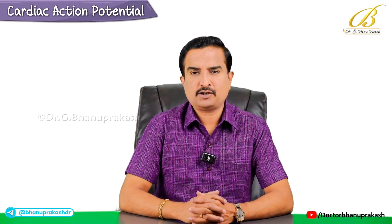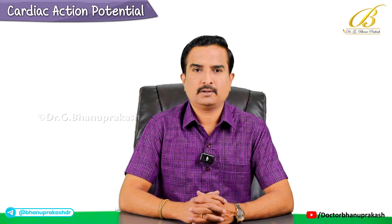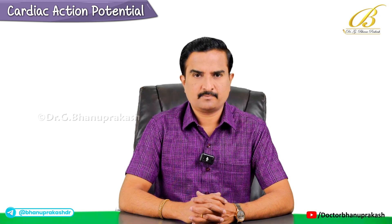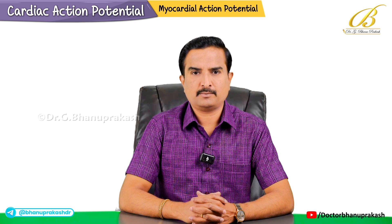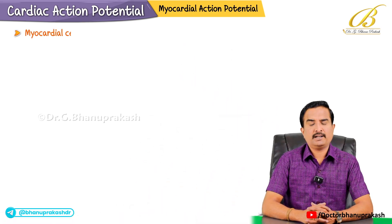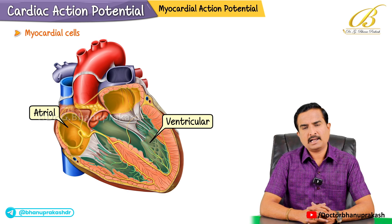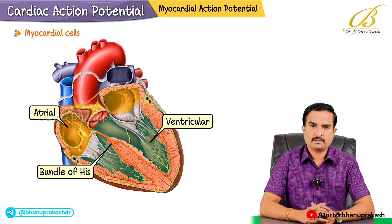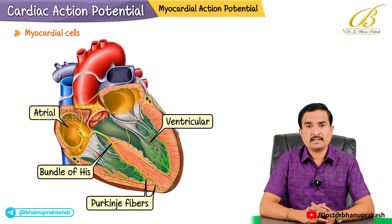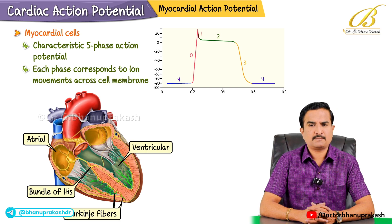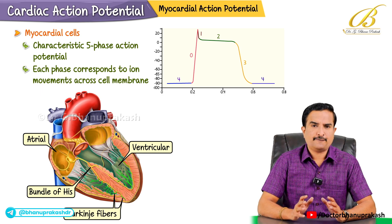Hello everyone. In this session we are going to take a deep dive into the cardiac action potential, examining both myocardial and pacemaker cells. Let's get started with the myocardial action potential. Myocardial cells are found in the atrial and ventricular musculature as well as in the conduction pathways like bundle of His and Purkinje fibers. These cells have a characteristic five-phase action potential, phase 0 through phase 4, and each phase corresponds to specific ion movements across the cell membrane.